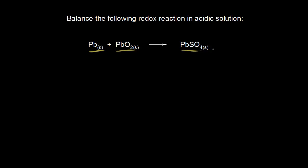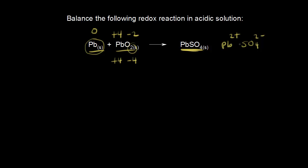The first thing we need to do is assign oxidation states. Starting with solid lead: the oxidation state of an element is zero, so it's zero for solid lead. For lead dioxide, oxygen has an oxidation state of negative two, and we have two of them, giving us negative four total. Since the sum of oxidation states in a neutral compound is zero, lead must be plus four. For lead sulfate, we know sulfate is SO₄²⁻, so we're dealing with the Pb²⁺ cation — the oxidation state is plus two.